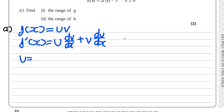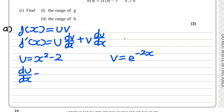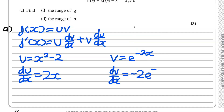So u equals x squared minus 2, and v equals e to the power of minus 2x. If we differentiate both of these: du/dx equals 2x, because the constant minus 2 disappears. And dv/dx equals minus 2 e to the power of minus 2x, because that minus 2 comes down as a coefficient.